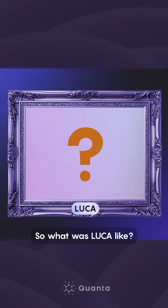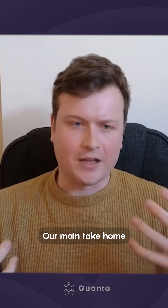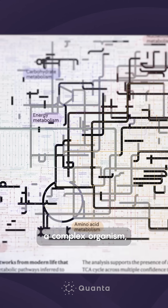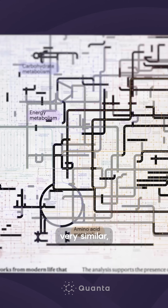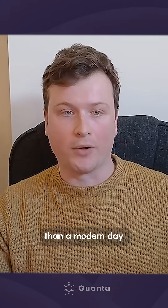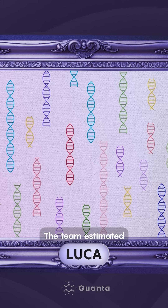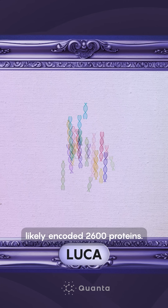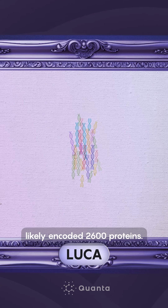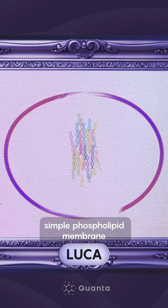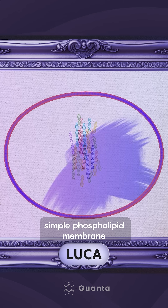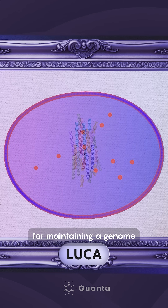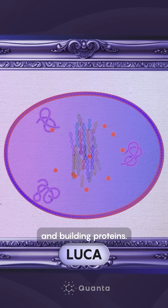So what was LUCA like? Our main take-home result is that LUCA is a complex organism, very similar, perhaps a bit smaller than a modern-day bacterium. The team estimated LUCA's genome likely encoded 2,600 proteins.